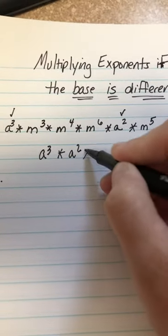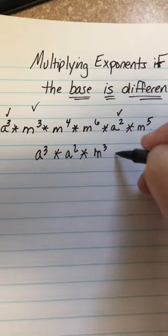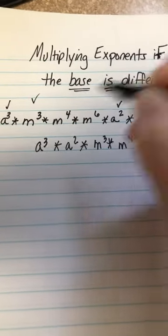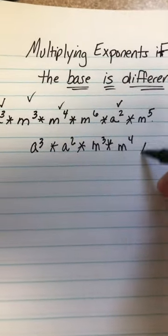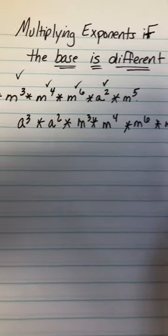Now I have my m's. So now I'm going to multiply by m to the third. I got that one. By m to the fourth. I got that one. By m to the sixth. I got that one. By m to the fifth.